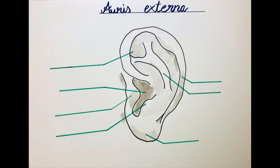The external ear is comprised of the auricle and the external acoustic meatus. The auricle helps to catch acoustic signals from the environment, which are led through the acoustic canal, or the external acoustic meatus, into deeper areas of the ear. In the next video I'm going to talk about the middle ear, but for now we're just going to talk about the outer portion.